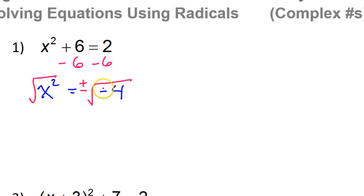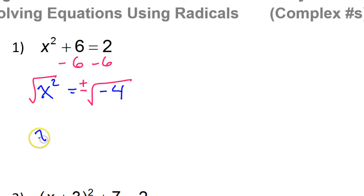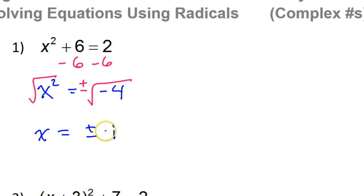When we have a negative underneath a radical, that's going to be i. So now I'm going to have i. Taking the square root, this is just x now. So this is going to be plus or minus, and the square root of 4 is 2, so that's going to be 2i. That's the answer.